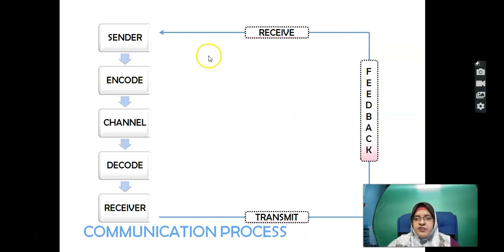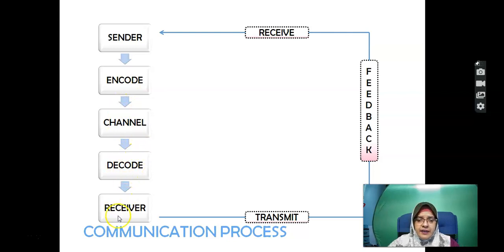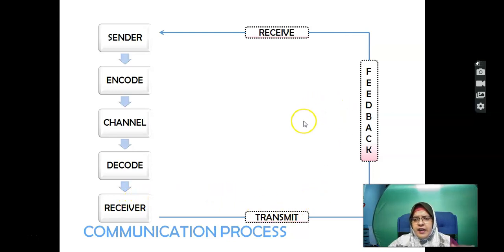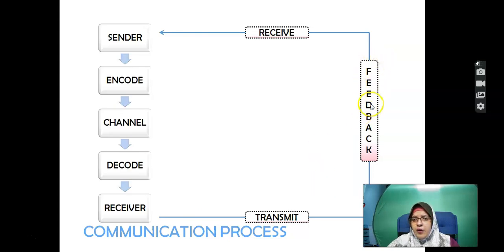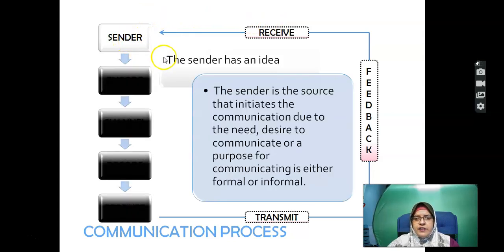The process starts from the sender who encodes the message, uses a chosen channel, and the message is transformed and sent to the receiver. The receiver then transmits the received message, with or without noise. The sender is the source that initiates the communication due to a need, desire to communicate, or purpose, and the communication is either formal or informal.